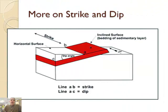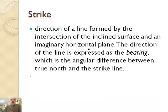Now the forces aren't always in a perfect direction, so let's visit about this strike and dip. When you have a strike and a dip, you measure the strike and then you measure the dip. The strike is actually the direction on which this goes. It's the direction of a line formed by the intersection of the inclined surface and an imaginary horizontal plane. The direction of the line is expressed as the bearing, which is the angular difference between true north and the strike line.